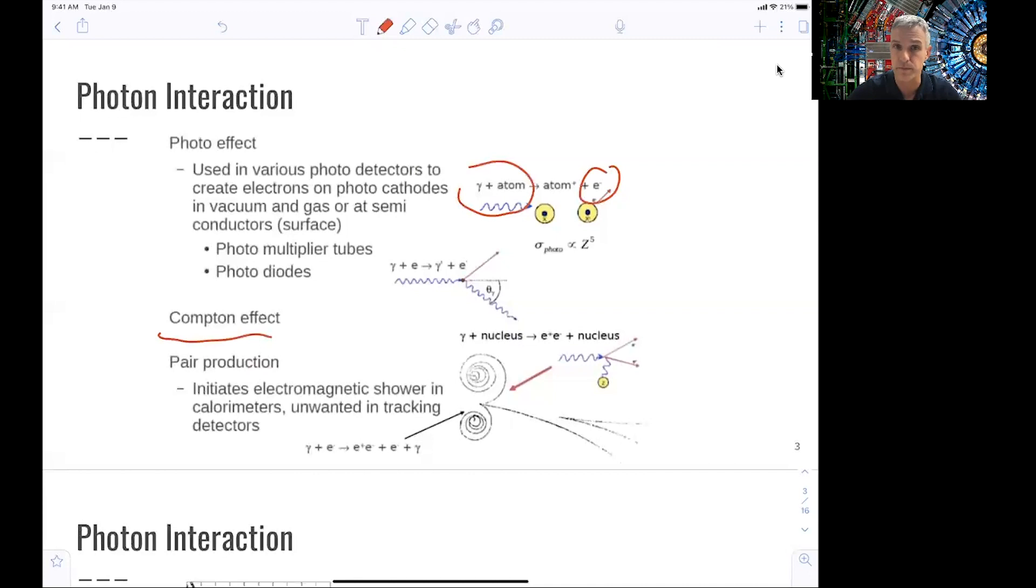And then there's pair production. Pair production dominates at high energies and typically is part of an initiation process of electromagnetic showers in calorimeters.